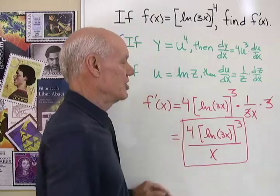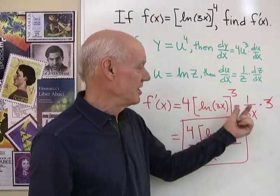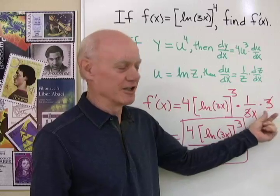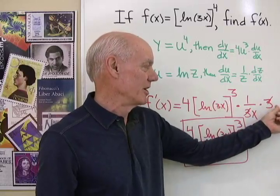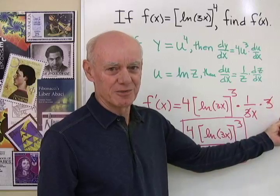So we call this the chain rule because we're just chaining these derivatives together like this. We keep differentiating until we get really dx dx, which is just 1.